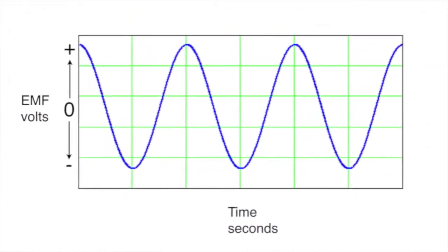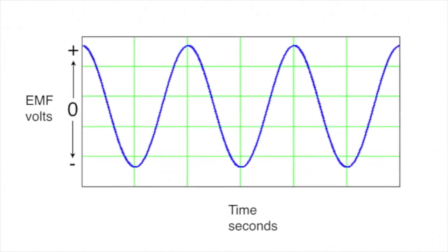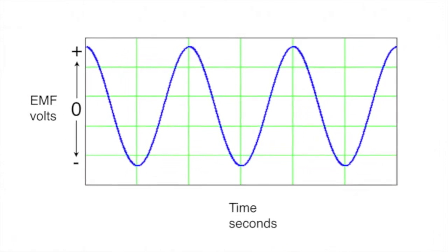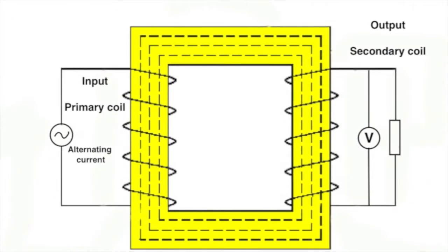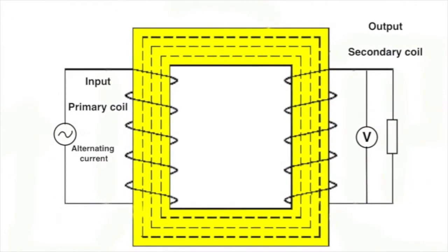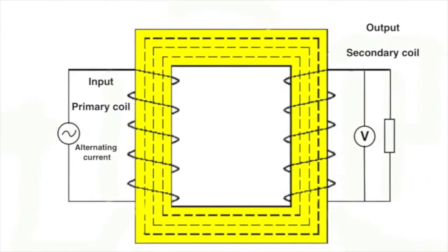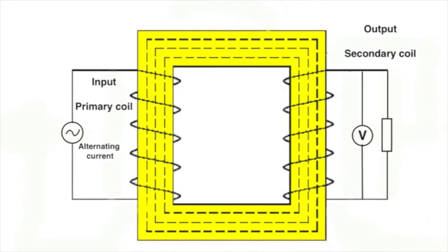All our power stations produce alternating current, not direct current, and they have to do so, so that the electricity can be distributed. And it can only be distributed by using transformers, as we'll explain in a few minutes.